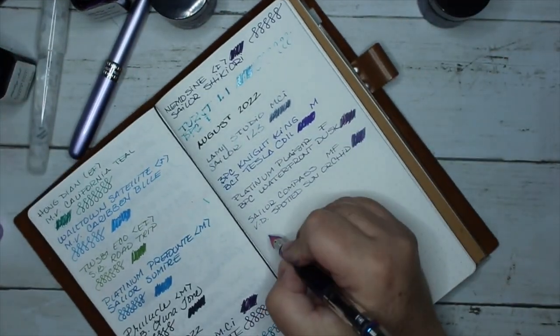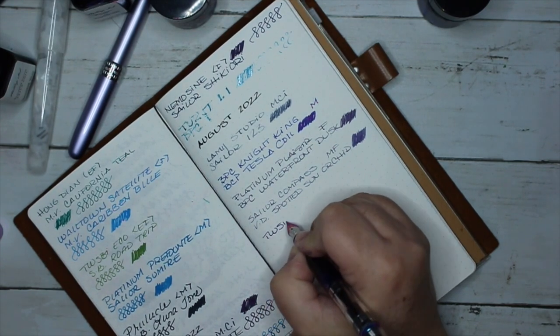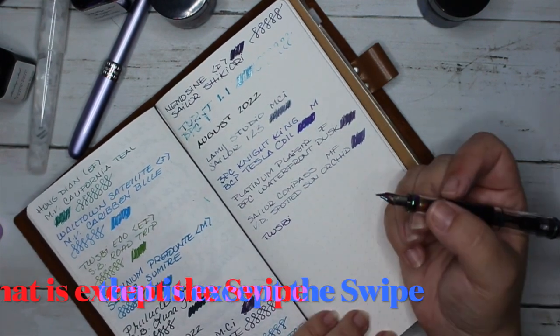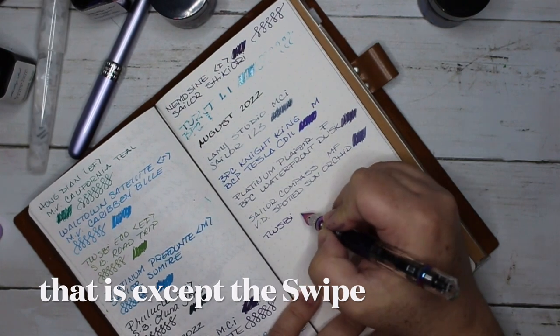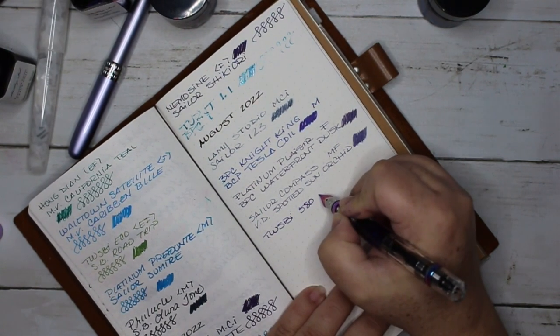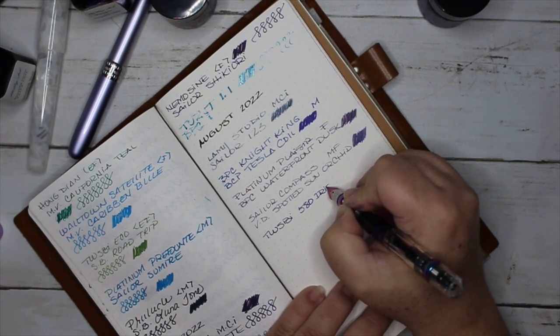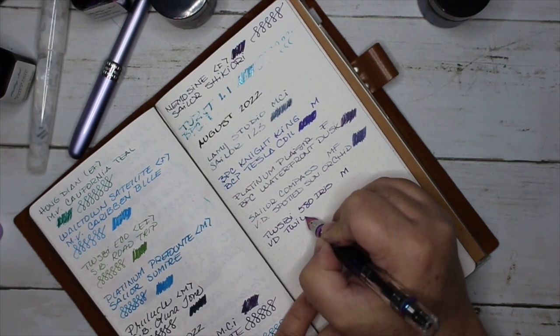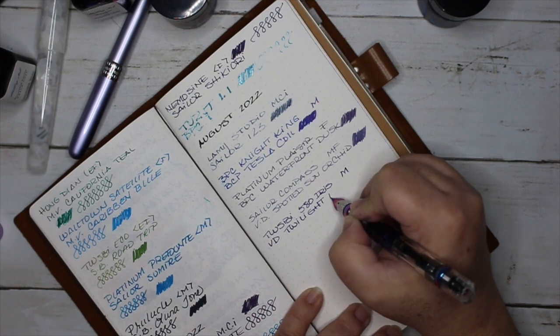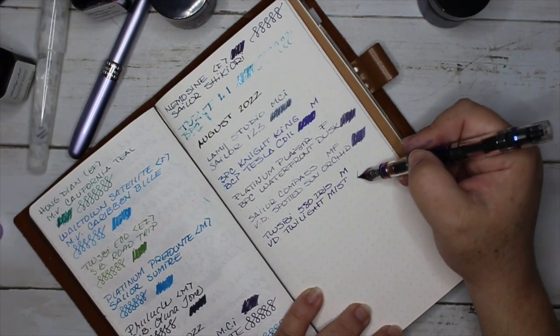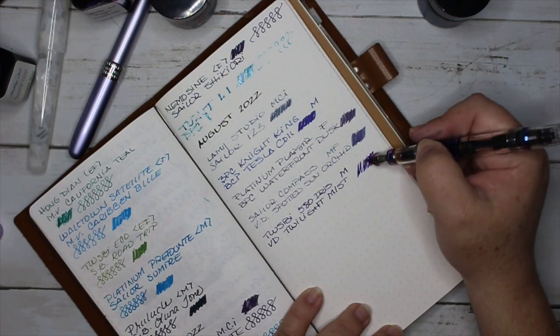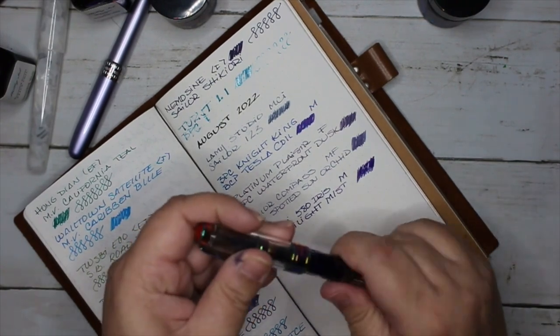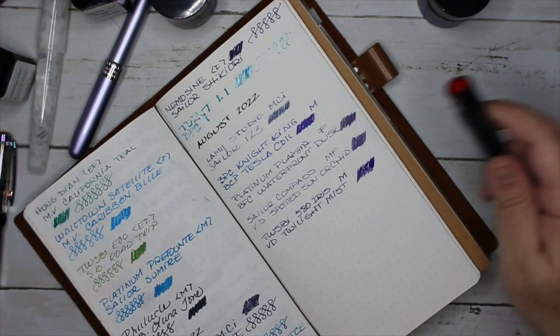It did give me a little trouble, I won't lie, which is expected because it's a shimmer ink and I've never had really good luck with Twsbi and shimmer inks. 580 Iris in the medium nib. However, once I got it going, it's pretty nice. They're working together quite nice, and my journal seems to like this combo too.